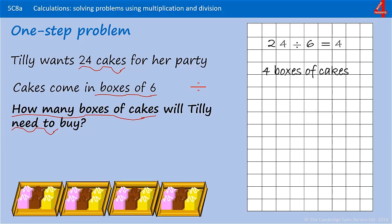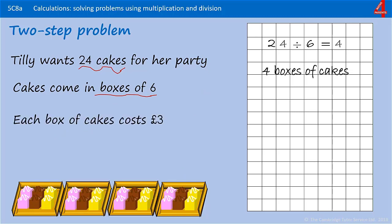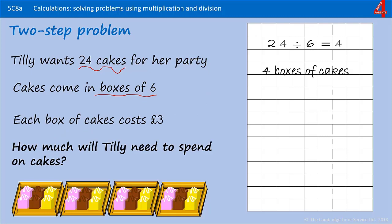But we haven't finished answering the question because the original question wants to know how much will Tilly need to spend on cakes. We know that she has four boxes of cakes and we know that each box of cakes costs three pounds, so four times three pounds — that's 12 pounds. So to answer the question: Tilly spends 12 pounds on cakes.